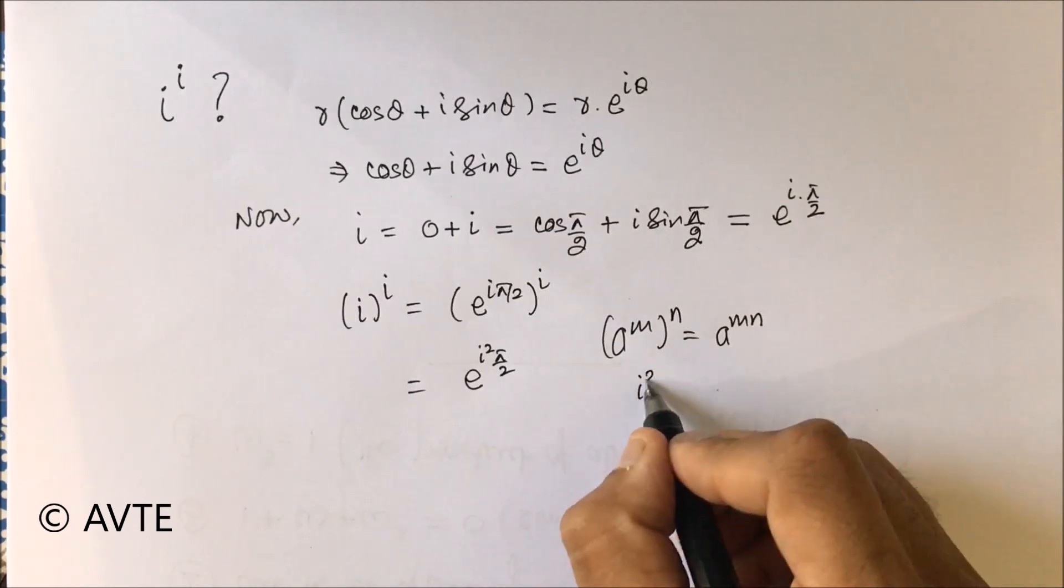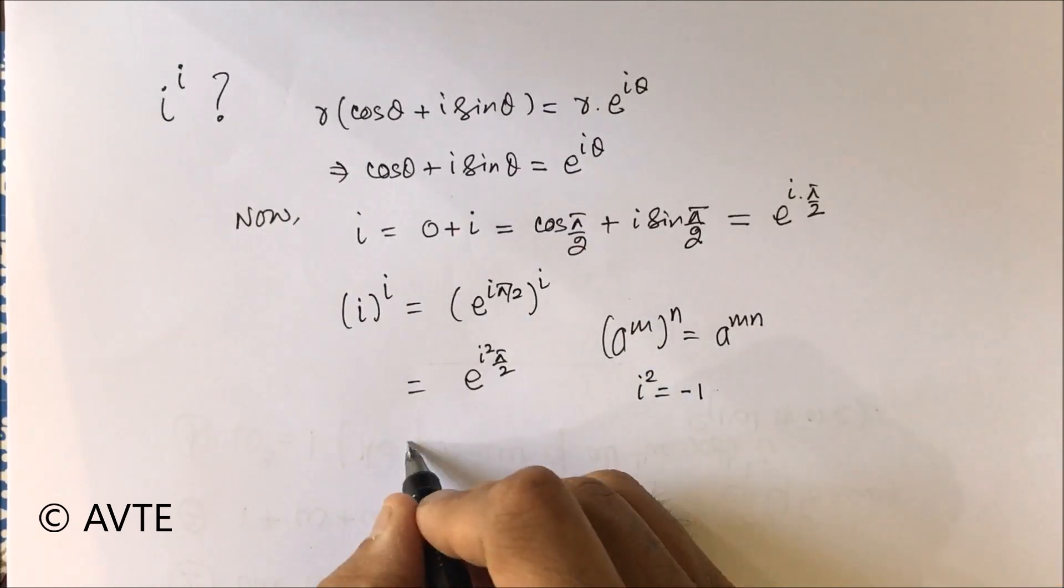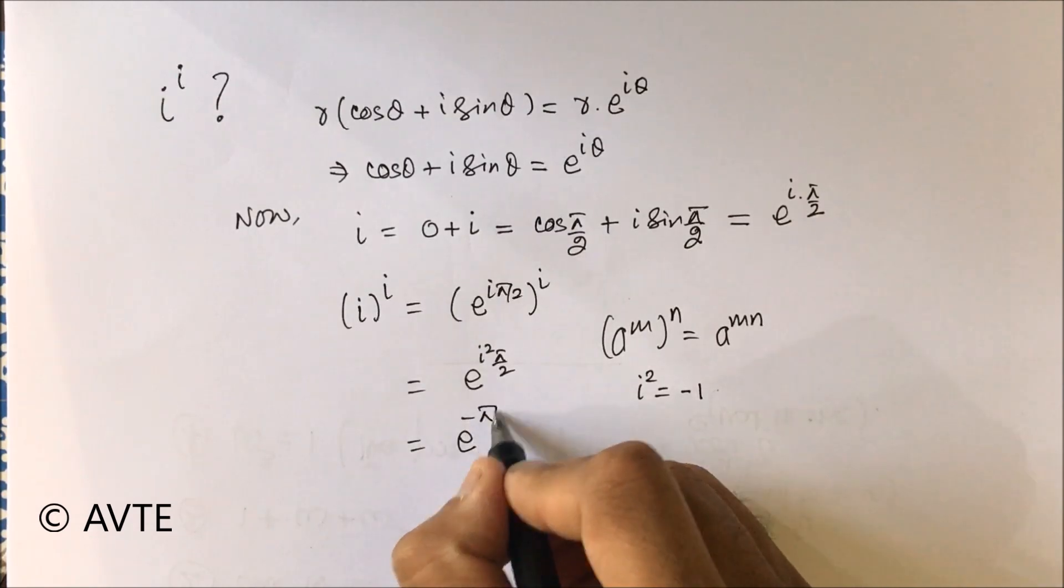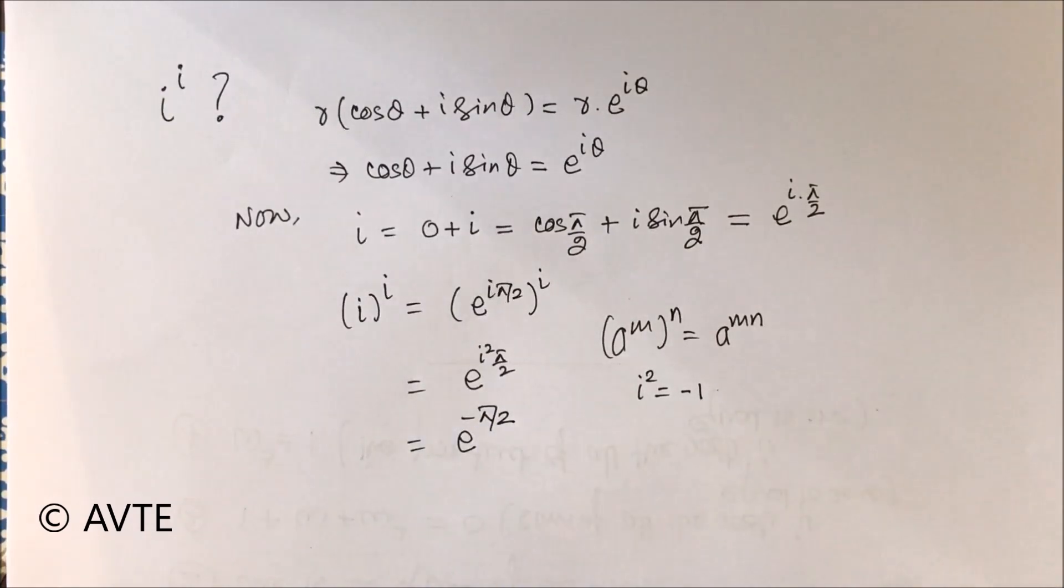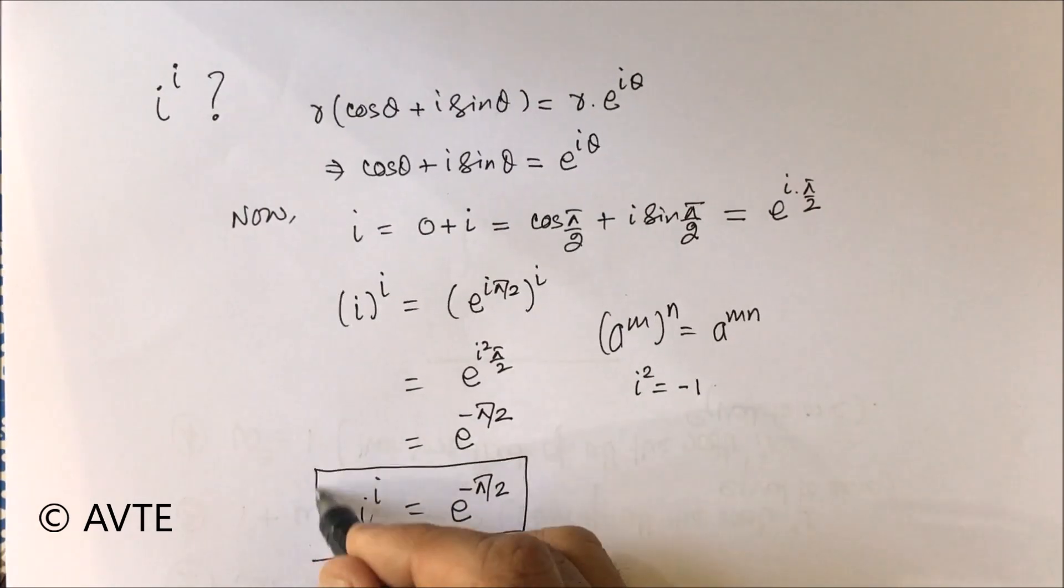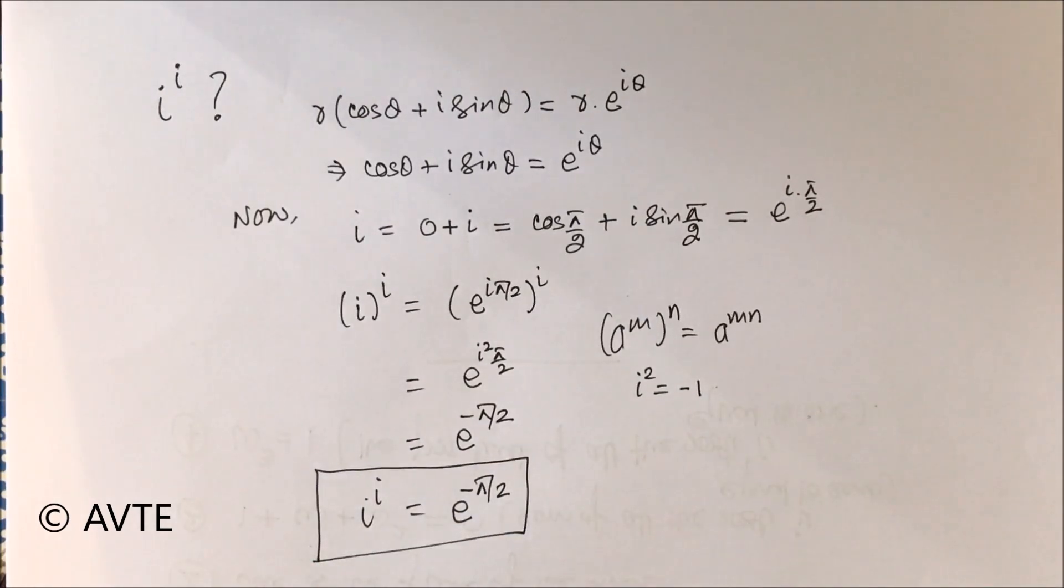And iota squared is minus 1, a real number, so it turns to e to the power minus pi by 2, and it becomes a real number. So iota to the power iota is e to the power minus pi by 2. This is the answer. Thank you very much.